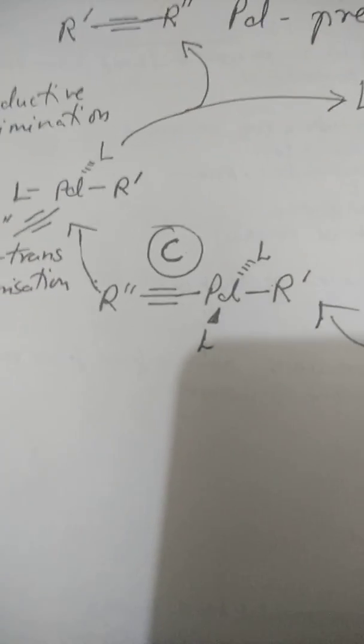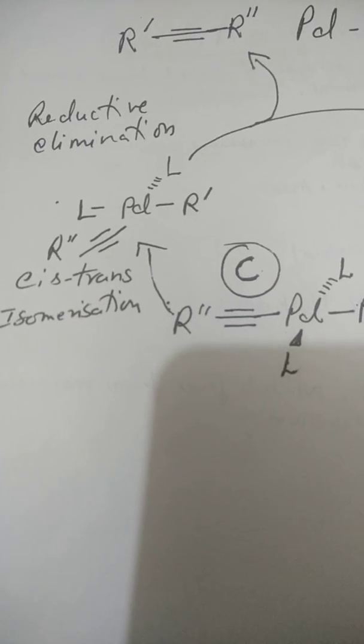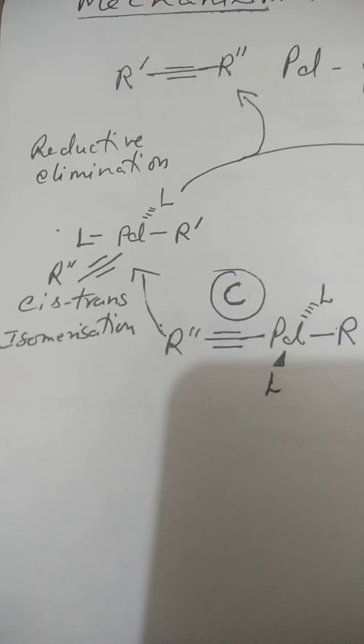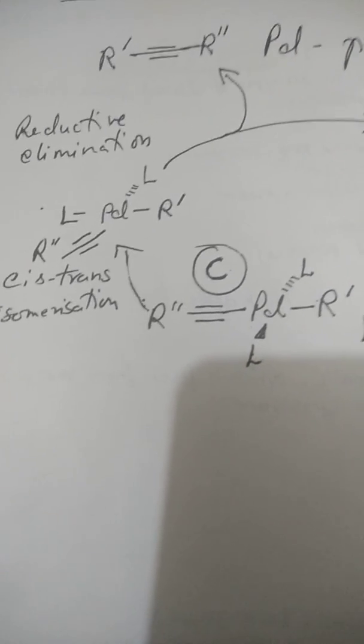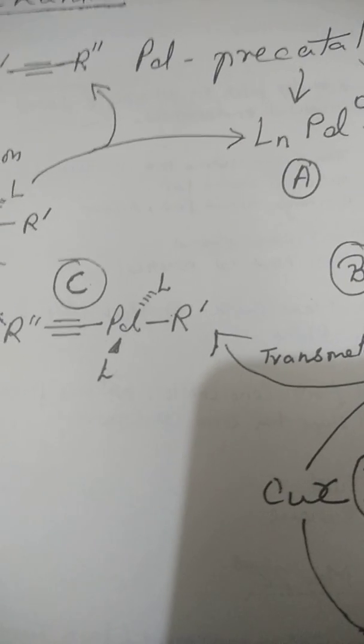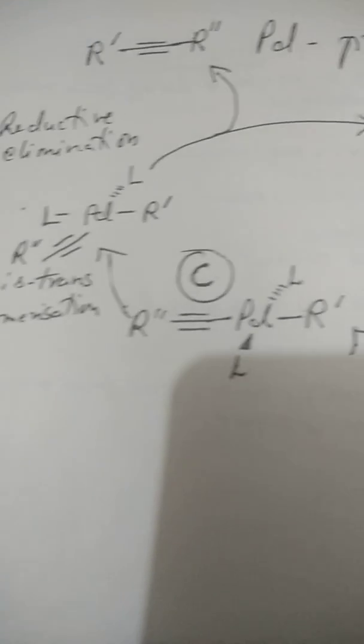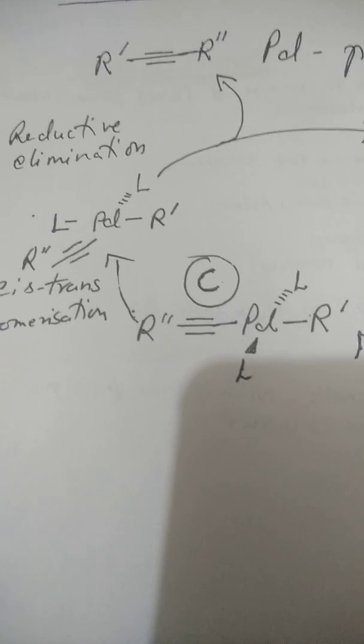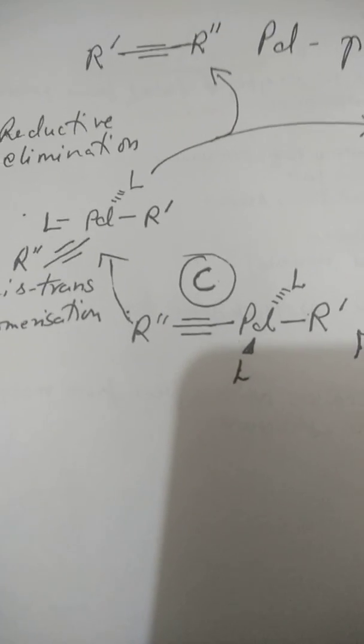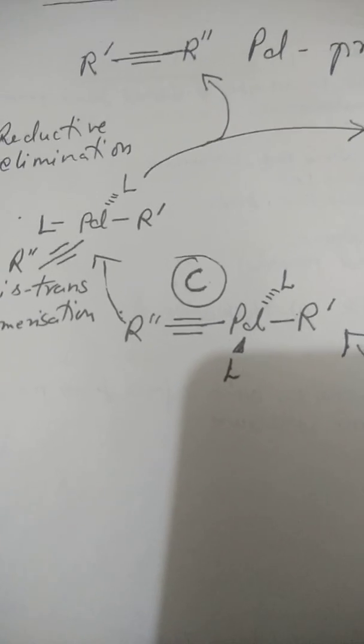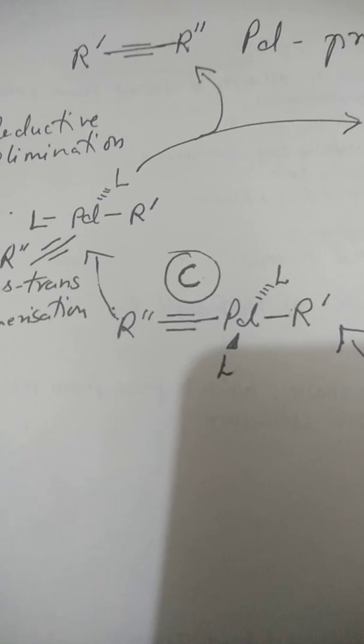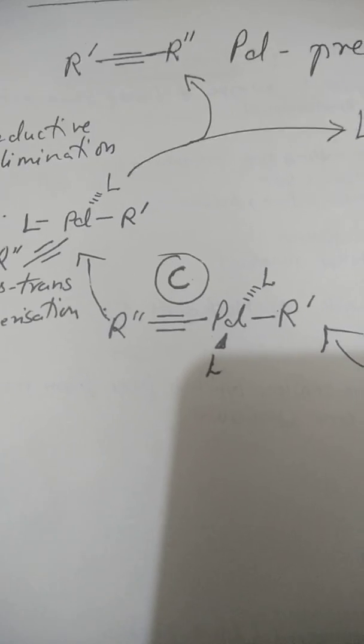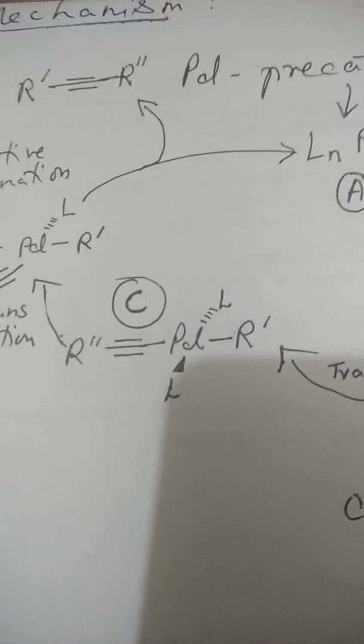That is C, this complex C is formed. Now this complex C by means of cis-trans isomerization as can be seen is converted into the final product. How? By means of reductive elimination. Reductive elimination since we get our palladium catalyst back. So here Pd with the ligands is eliminated and the bond between the carbon and this vinyl or aryl, whatever it may be, R', is formed. So the coupled reaction is complete and we get the product.